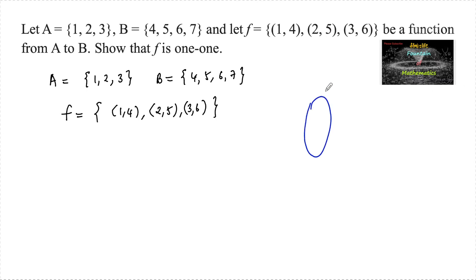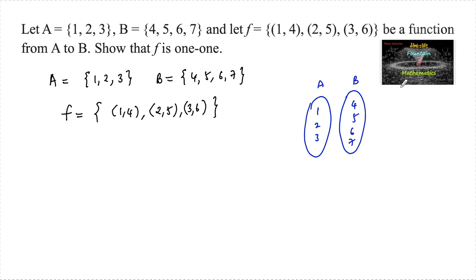The domain is A = {1, 2, 3} and the co-domain is {4, 5, 6, 7}. The mapping is given as: 1 maps to 4, 2 maps to 5, and 3 maps to 6.